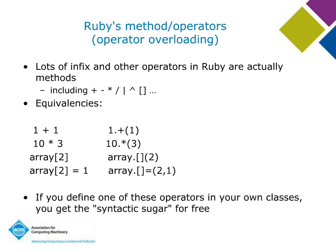A lot of infix operators in Ruby are actually methods. `1 + 1` is actually `1.+(1)` — calling a method called `+` with an argument of one. Ruby lets you have the syntactic sugar of using it as an infix operator, even though it's parsed as a method call. `10 * 3` is really `10.*(3)`. Even the square brackets for indexing and setting array values are actually methods. You can define a `+` method in your own classes and get this syntactic sugar for free.